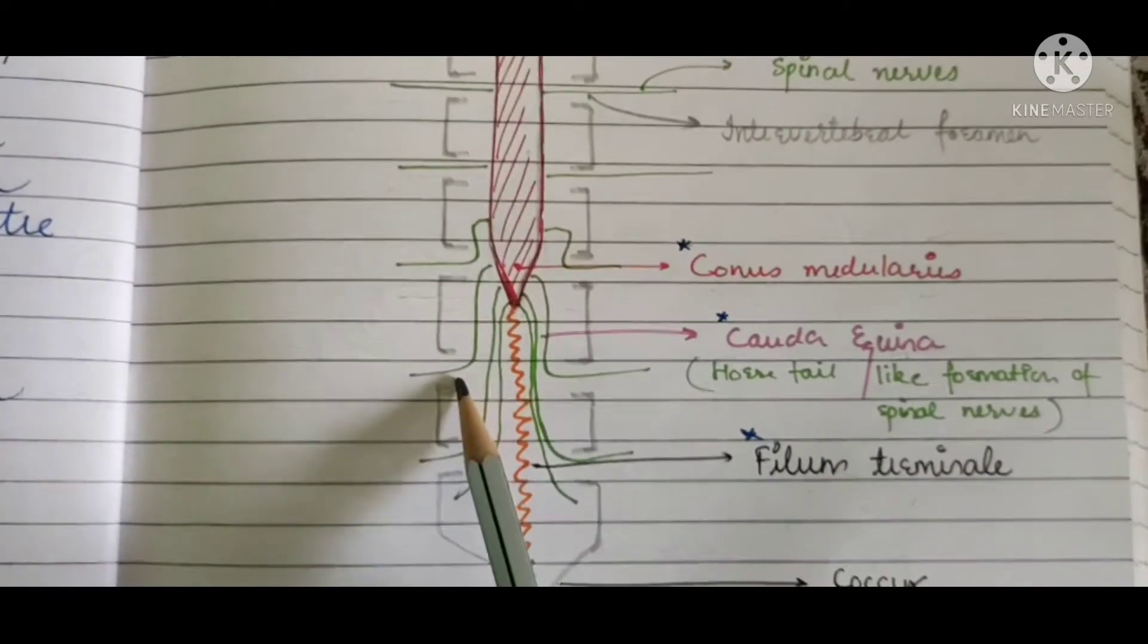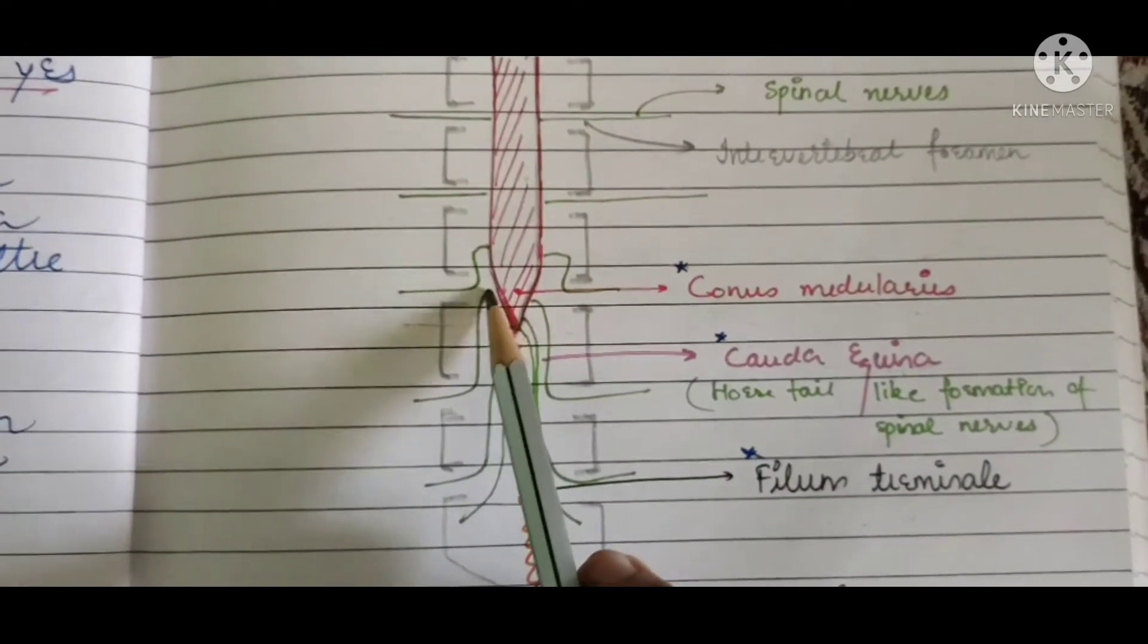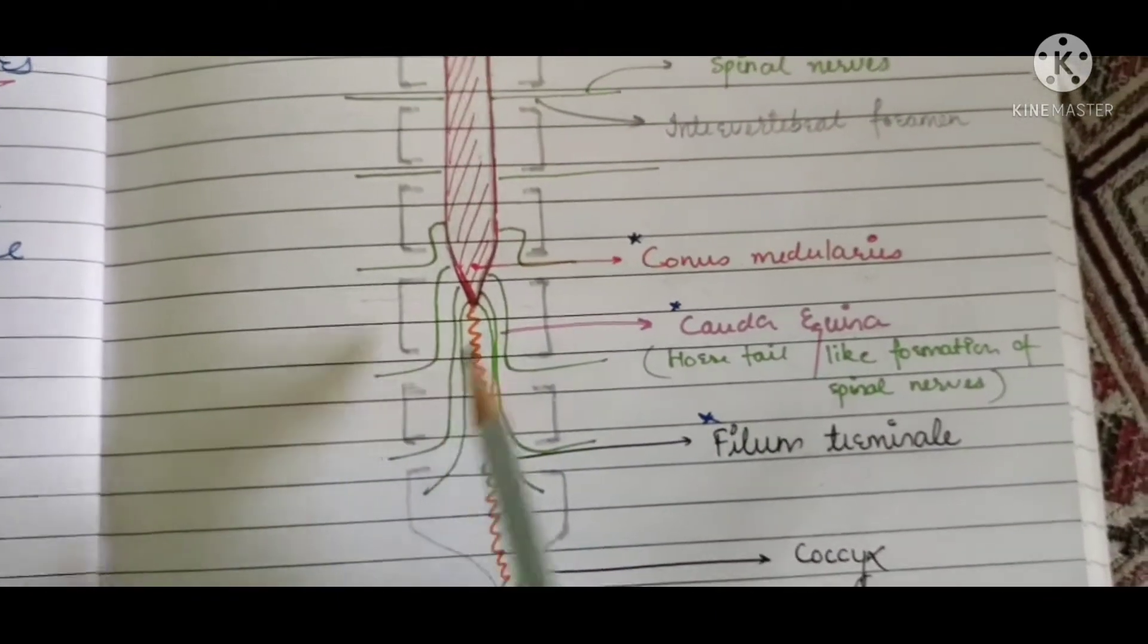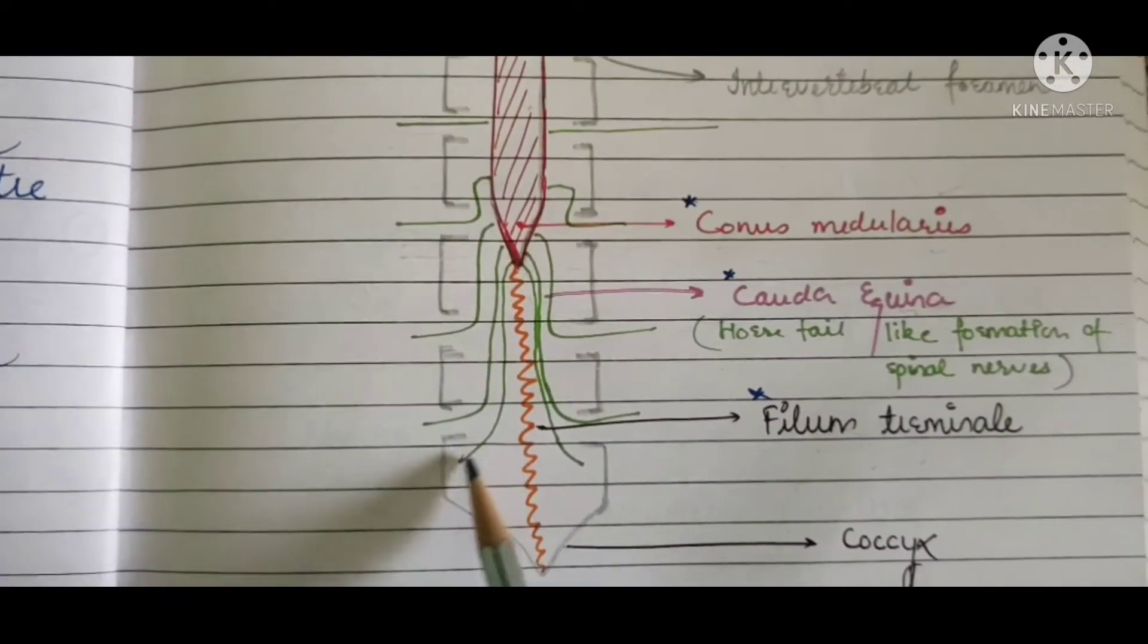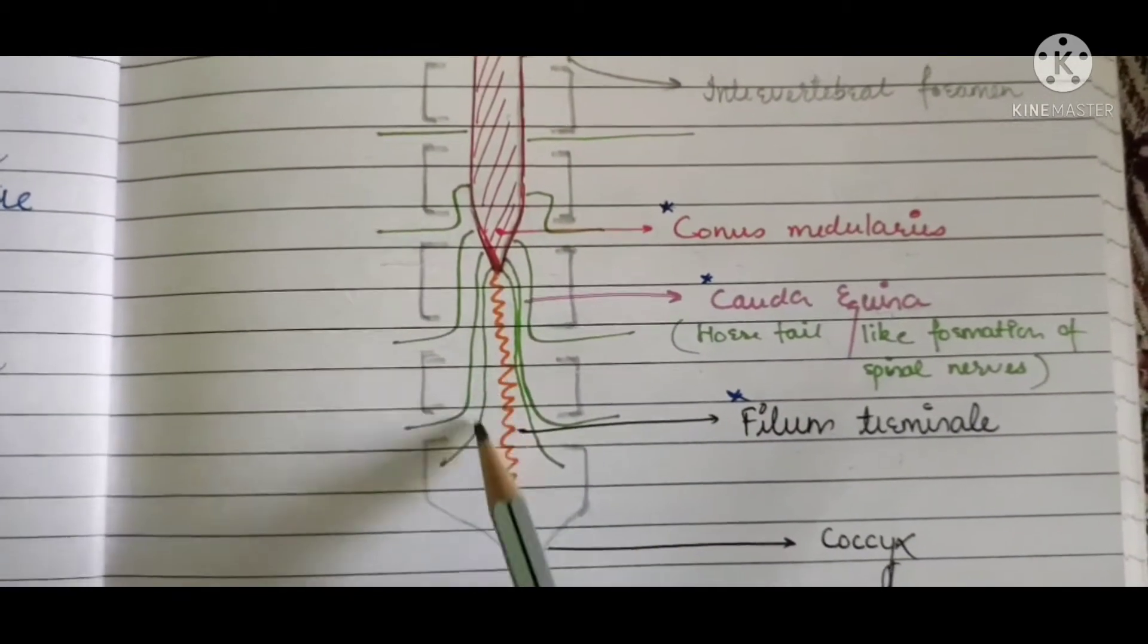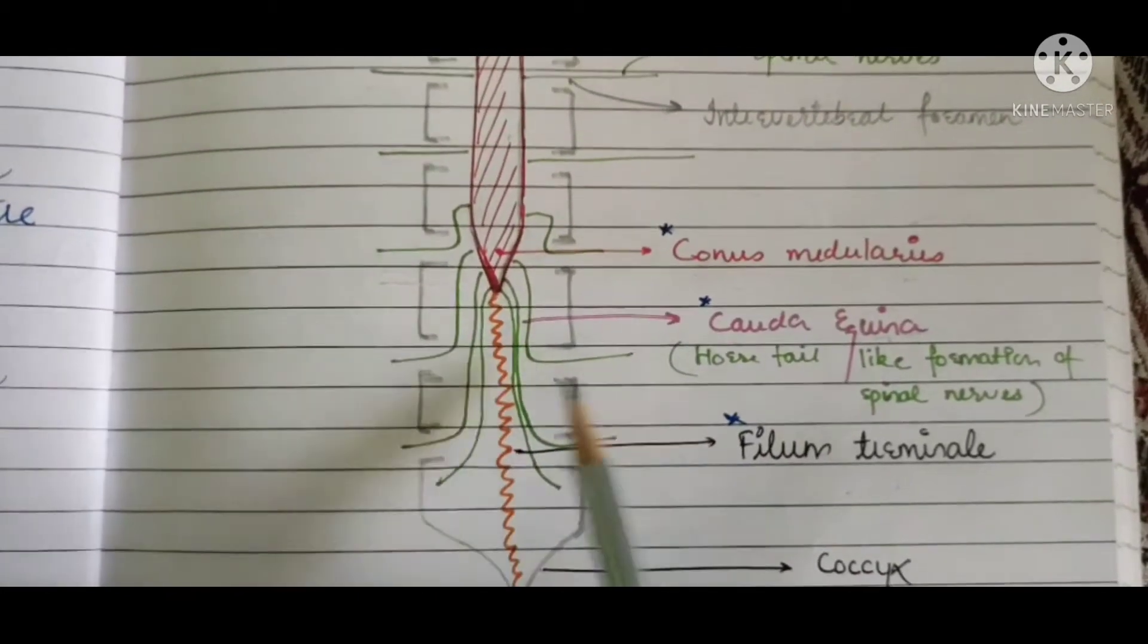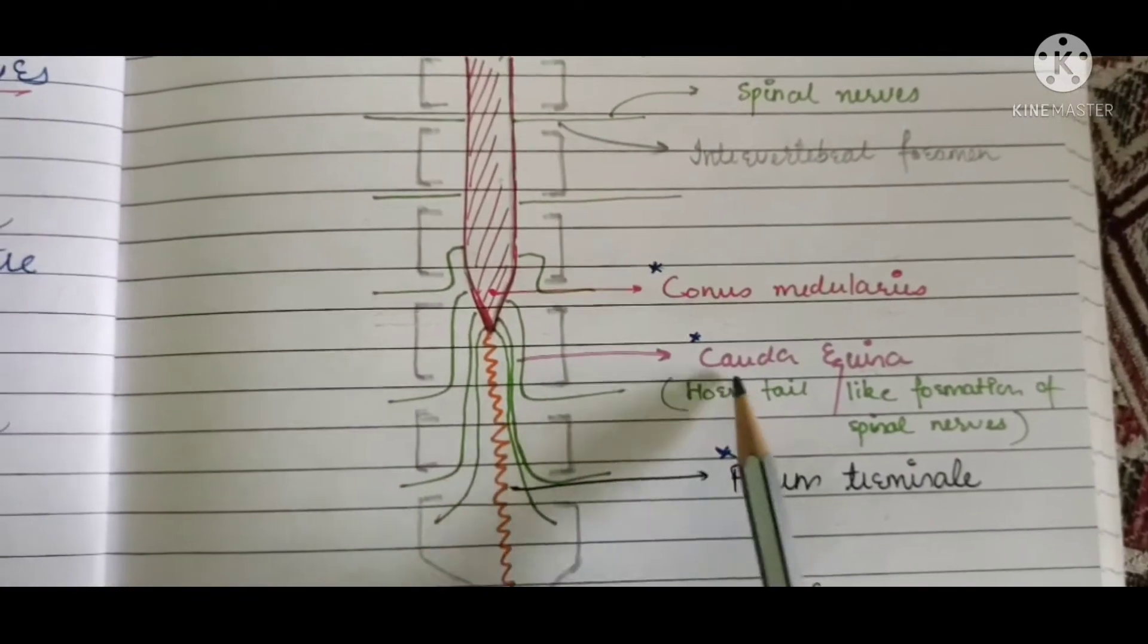But when this ended at the L1-L2 level, the spinal nerves are still arising from it and are finding way to exit. So these nerves, some of the nerves are coming from this intervertebral foramen, some are going down. And what happens is after some time, all these spinal nerves get aggregated at one intervertebral foramen.